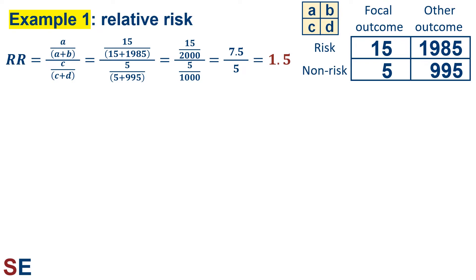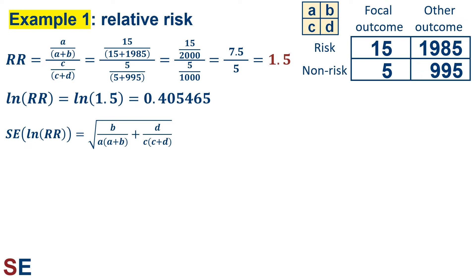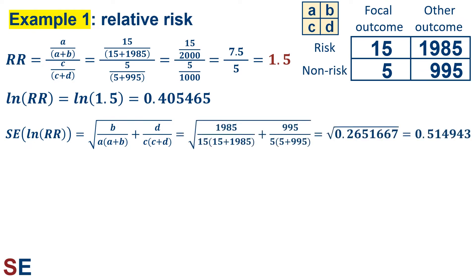This accurately depicts the 50% increased risk we guessed before we started. We usually need to calculate confidence intervals to use this value. Unfortunately, calculating confidence intervals for the relative risk takes several steps and requires natural logs and exponentiation. First we take the natural log of the relative risk, which is 0.405465. The next step uses this equation to calculate the standard error of the natural log of the relative risk. Plugging in the values gives us the square root of 0.265167, which is 0.514943. We then add and subtract 1.96 standard errors to the base value for a 95% confidence interval.